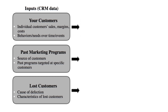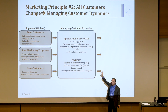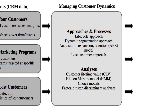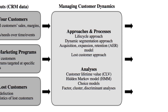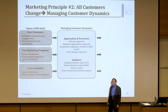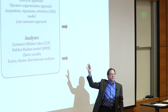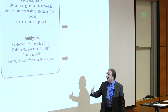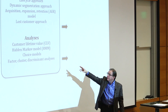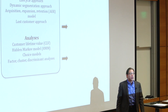We're also going to look at customers leaving because there's good information there. We feed that into this process box that manages customer dynamics. The lifecycle approach is a technique, but we understand its weaknesses. We'll mostly focus on dynamic segmentation or AER segmentation. We'll do lost customer analysis, use CLV, and I should mention hidden Markov models — that's a method for doing the dynamic segmentation simultaneously rather than breaking into three groups — though it's a little beyond today's presentation and is discussed in the book. Choice models, plus factor, cluster, and discriminant analysis are techniques from Market Principle 1 that we still use in Market Principle 2.